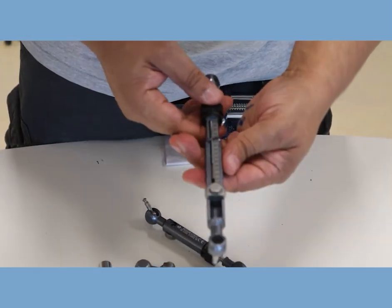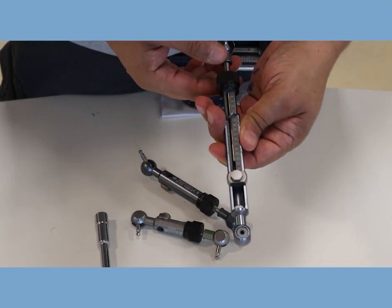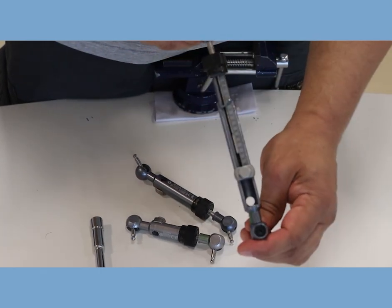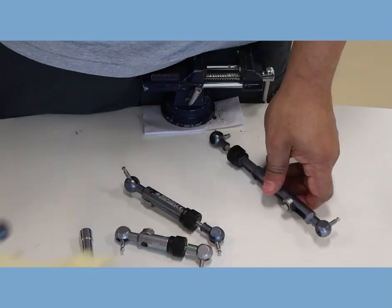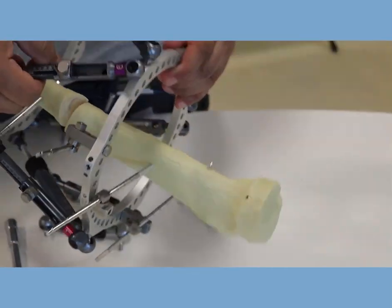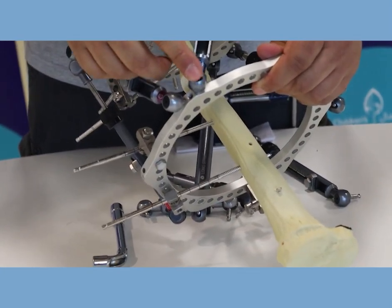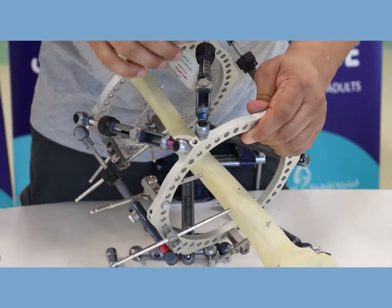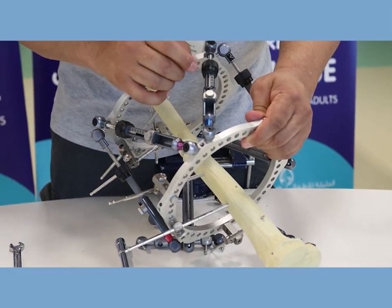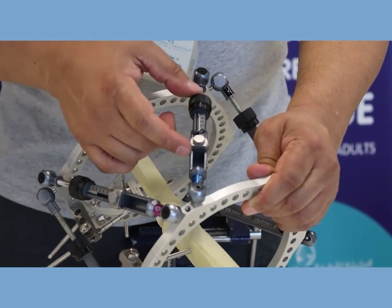The other one is the gradual correction mechanism which is this one with the knob here. These are usually fixed to the top and bottom of the ring. For example, in this frame, this is fixed at the top and this is at the bottom. You can see here on the knob there's an arrow. If you turn the arrow toward the plus sign, this is going to lengthen the strut.